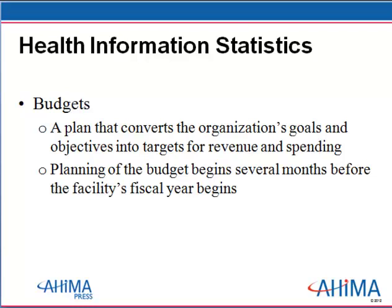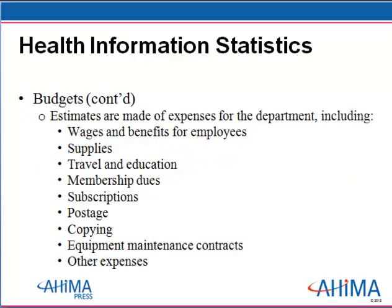If you are responsible for supervising a group of employees now or in the future, you will likely need to handle budgeting. HIM departments are typically involved with expense and capital budgets — a budget being a plan that converts the organization's goals and objectives into targets for revenue and spending. Budget planning begins several months before the facility's fiscal year starts. During the planning process, the HIM director or supervisor determines approximate department expenses for the coming year, which can include supplies, employee wages and benefits, memberships, subscriptions, postage, copying, and any other expenses the department incurs.